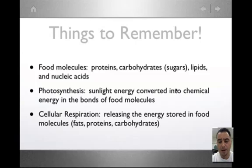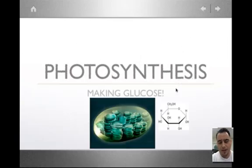And we're breaking them down, hopefully in the mitochondria, where we get the most energy. So photosynthesis is a process of making glucose and other sugars, and it happens in the chloroplasts.